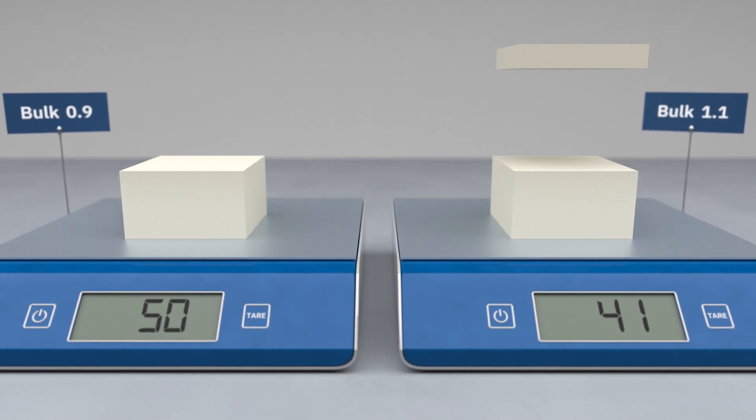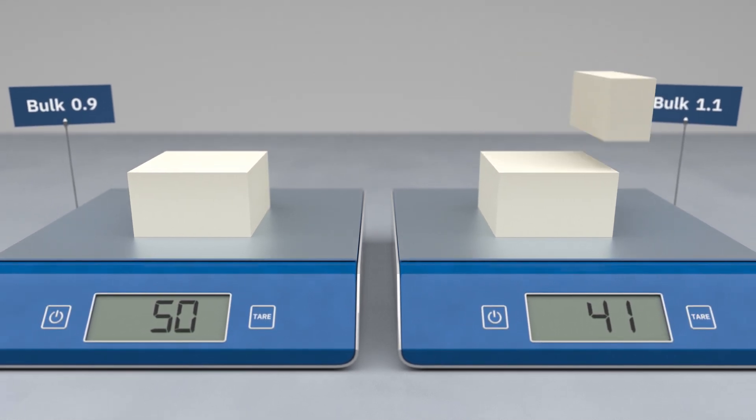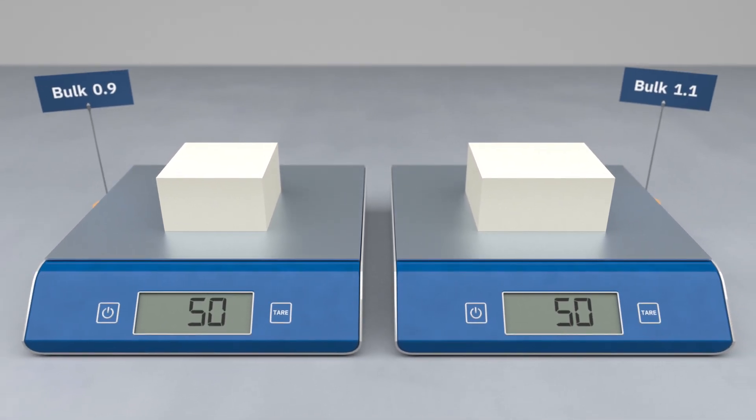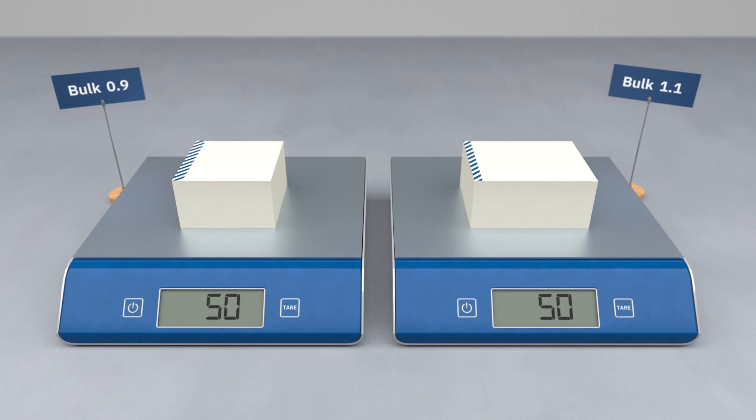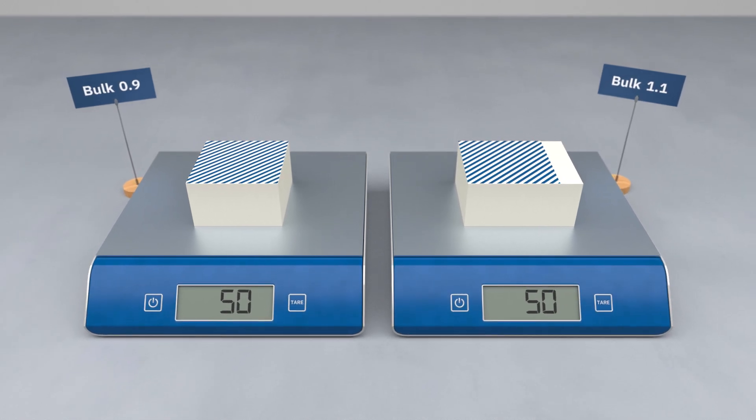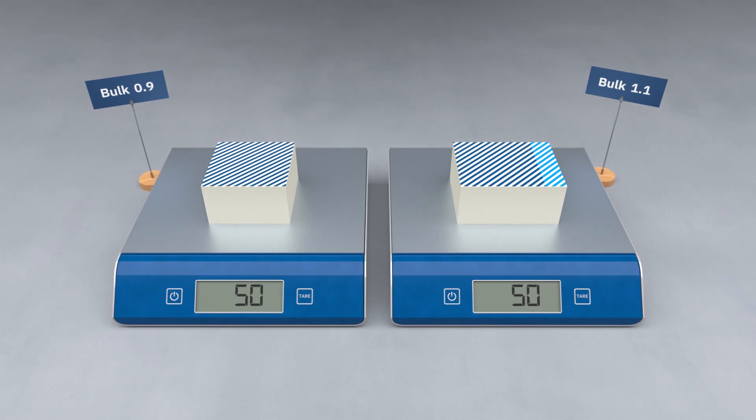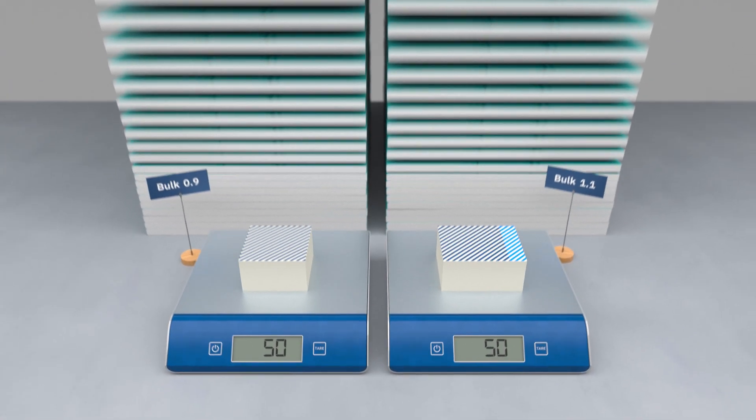When you buy paper in tonnes, what you really want to get out of those reels is square metres of printing surface. If the paper weighs less per square metre, you'll get more surface for each tonne that you buy. In some cases, the difference in weight can be as much as 16%. Imagine how much money that is!